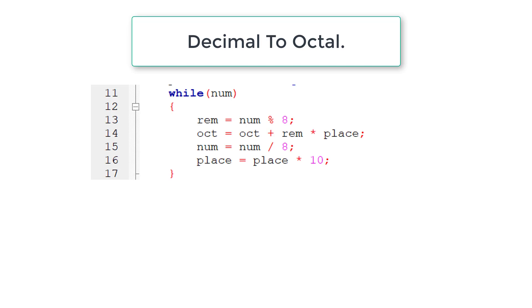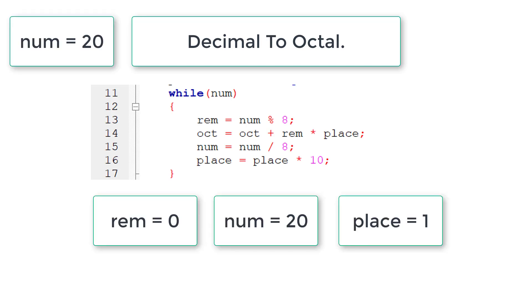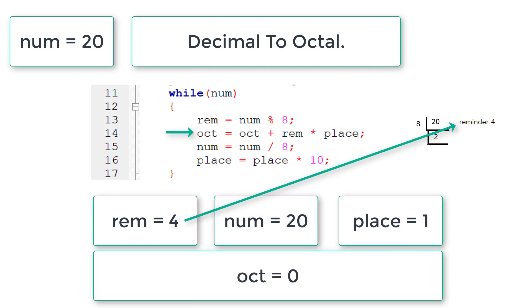Let's check this with a snippet of code. We initialize remainder equal to 0, place equal to 1. Number modular division 8 means remainder is 4. The next line, octal equals octal plus remainder times place becomes 4. Next, num equals num divided by 8. So place equals place times 10.